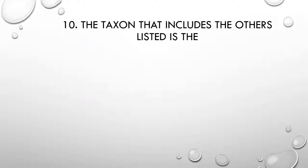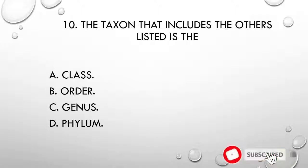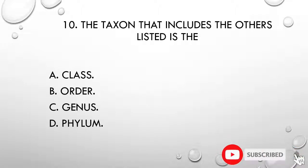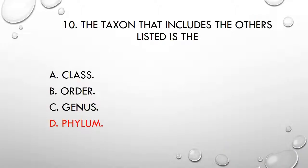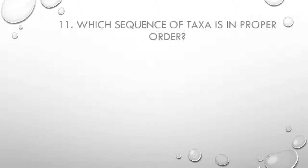Question 10. The taxon that includes the others listed is the: A) class, B) order, C) genus, D) phylum. The correct answer is D, phylum.